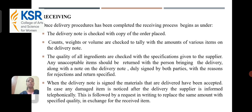Receiving: Once the delivery procedure has been completed, the receiving process begins. The delivery note is checked against the copy of the order placed. Counts, weight, or volume are checked to tally with the amounts of various items on the delivery note. The quantity of all ingredients is checked against the specifications given to the supplier. Any unacceptable items should be returned with the person bringing the delivery, along with a note on the delivery note duly signed by both parties, with reasons for rejection and return specified. When the delivery note is signed, the materials that are delivered have been accepted.